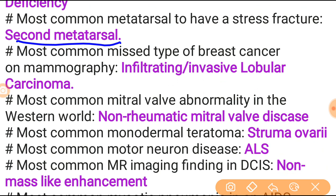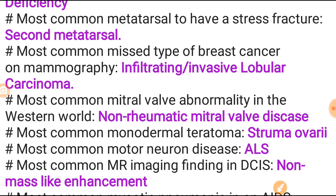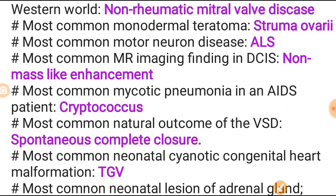Most common type of breast cancer on mammography is infiltrating or invasive ductal carcinoma. Most common mitral valve abnormality in the western world is non-rheumatic mitral valve disease. Most common monothermal teratoma is struma ovarii. Most common motor neuron disease is ALS - amyotrophic lateral sclerosis. Most common MR imaging finding in DCIS is non-mass-like enhancement. Most common mycotic pneumonia in AIDS patients is cryptococcus. Most common natural outcome of VSD is spontaneous complete closure. Most common neonatal cyanotic congenital heart disease malformation is TGV.